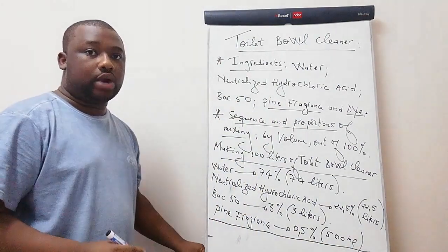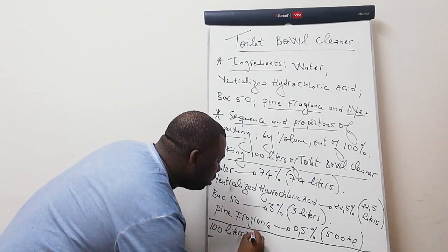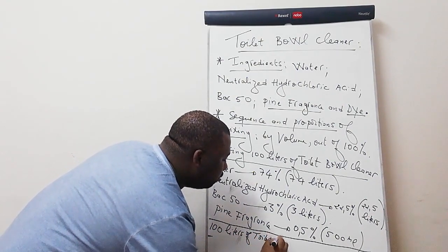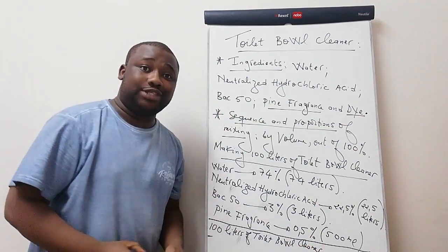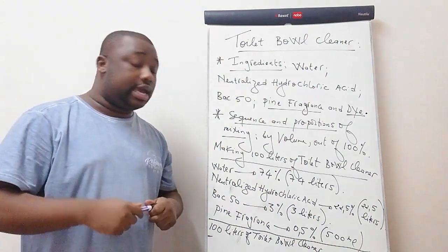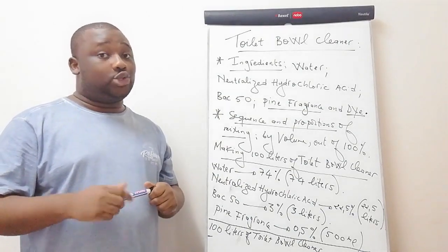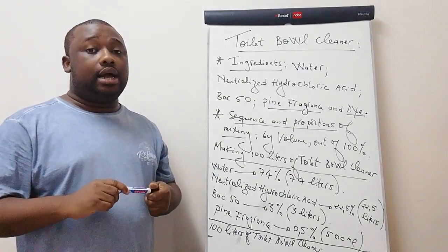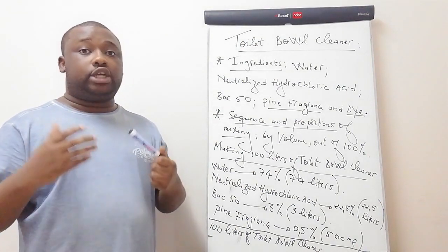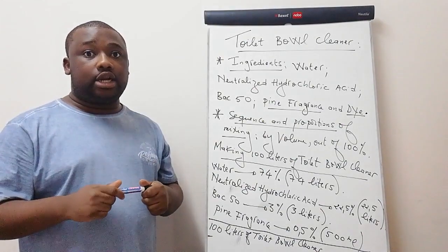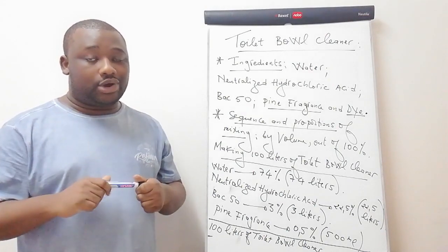By doing this you obtain 100 liters of your toilet bowl cleaner. Thank you guys for watching. Make sure you subscribe to the channel — there is a lot to learn here. Make use of this online formulation training program, like and share the videos, refer the channel to people with an interest in learning, and see you in the next video.